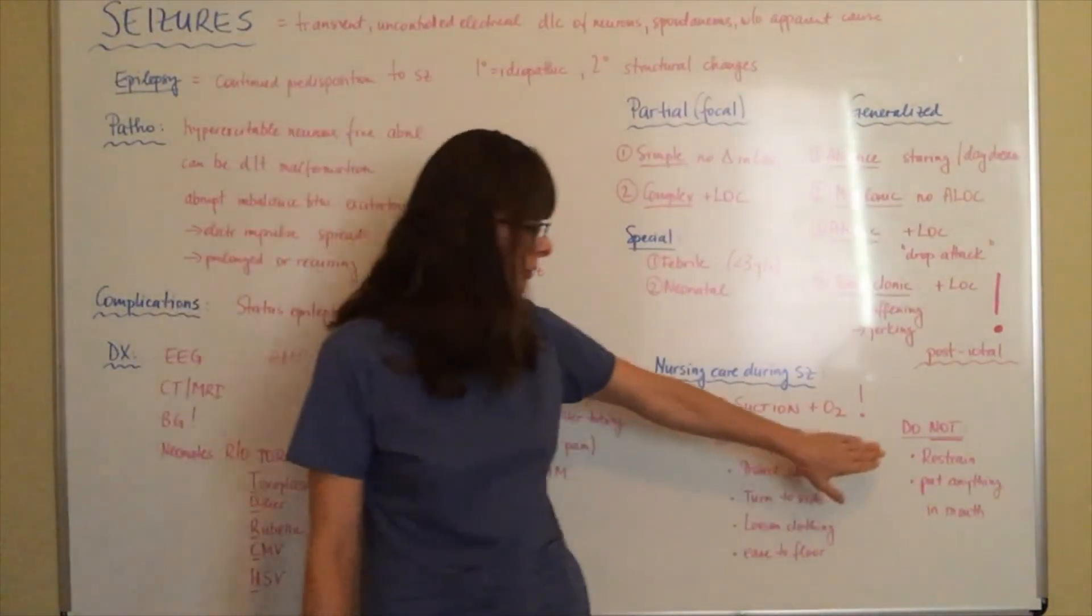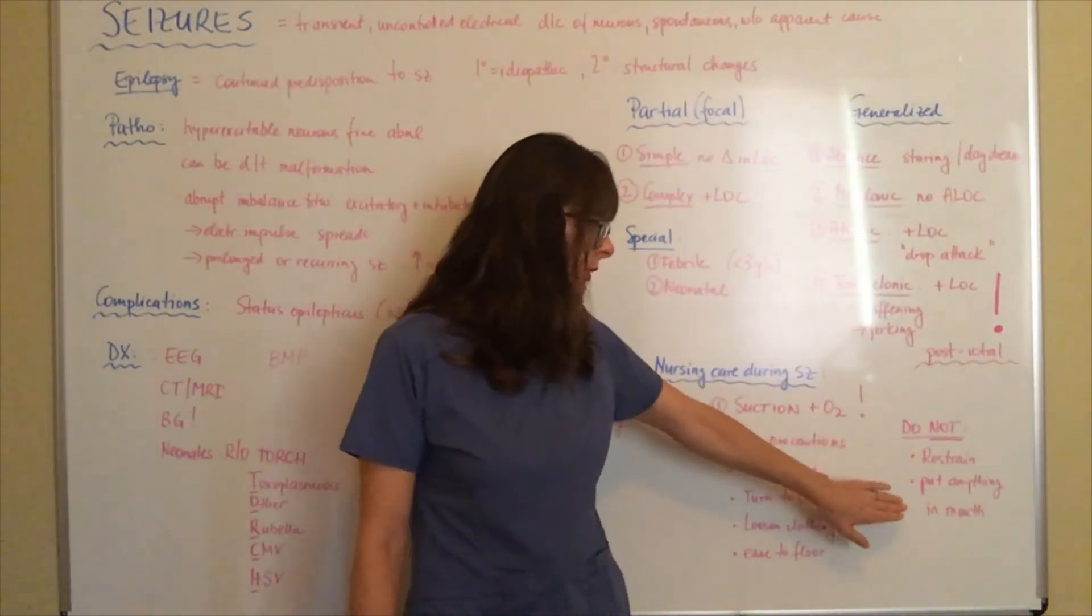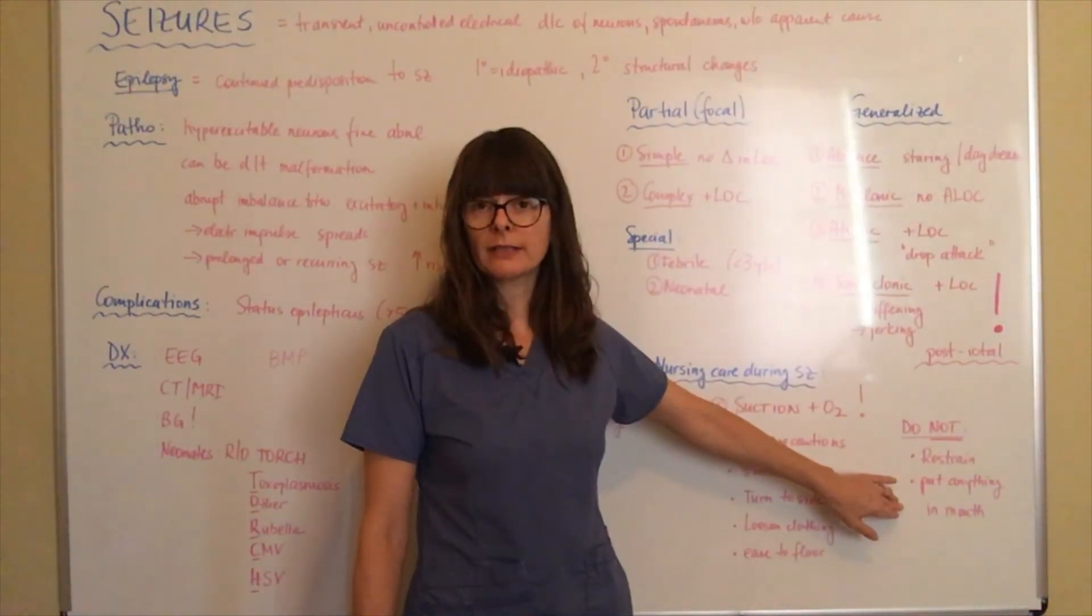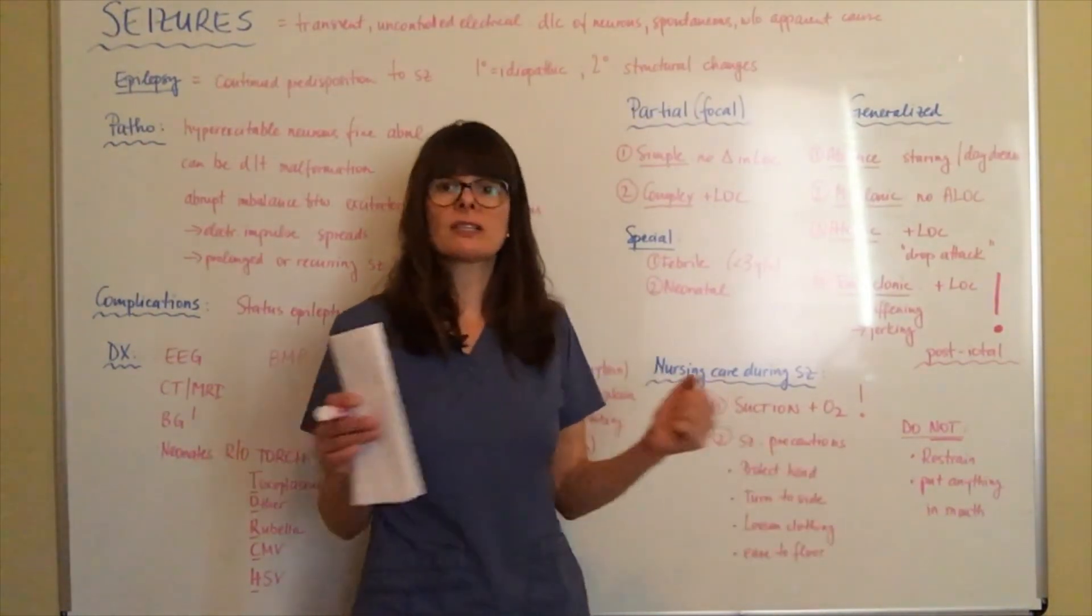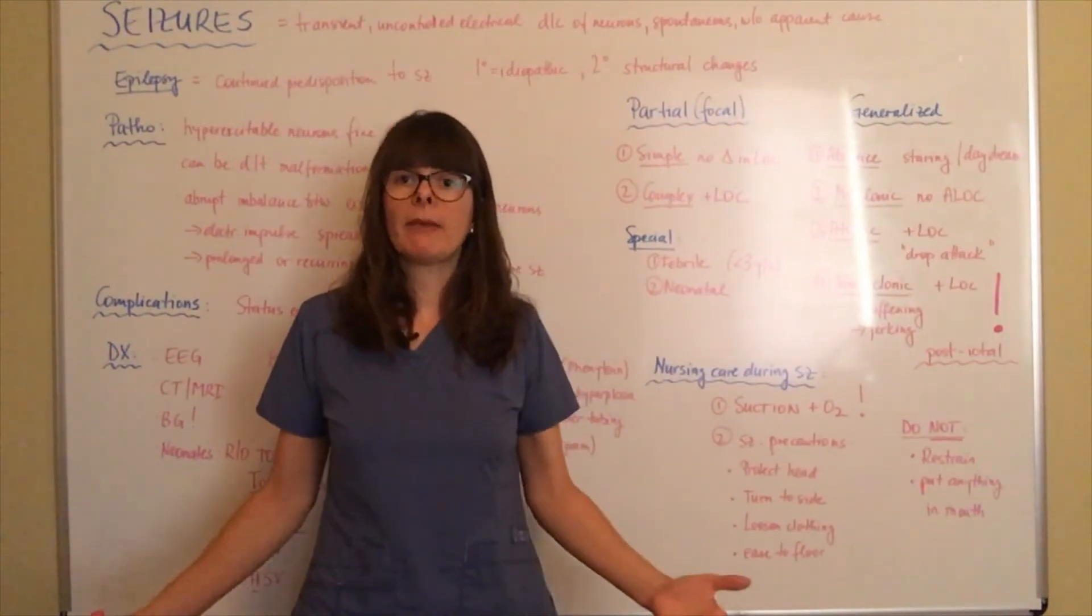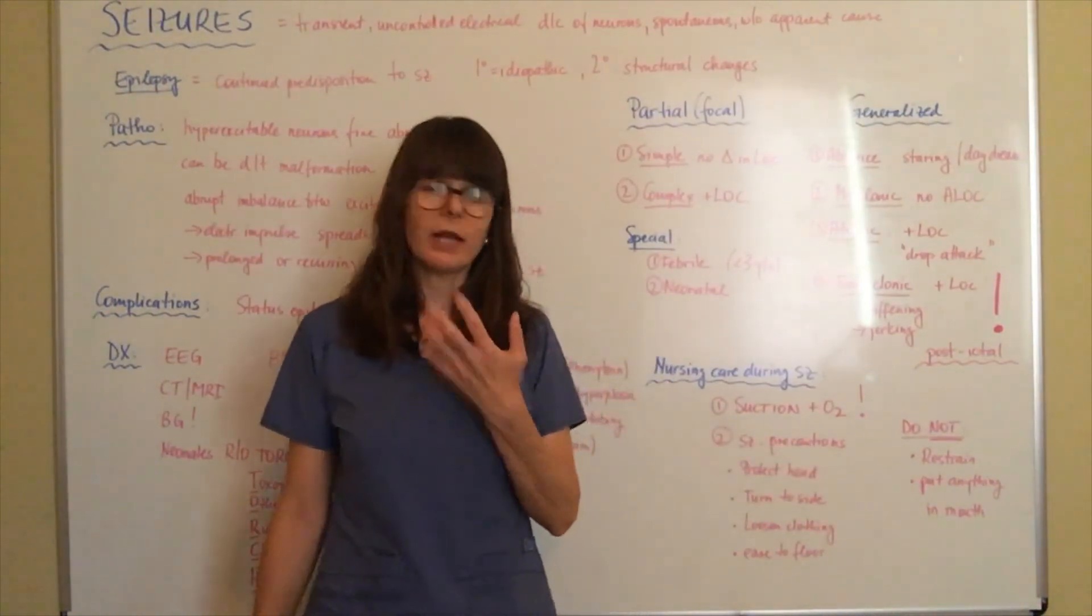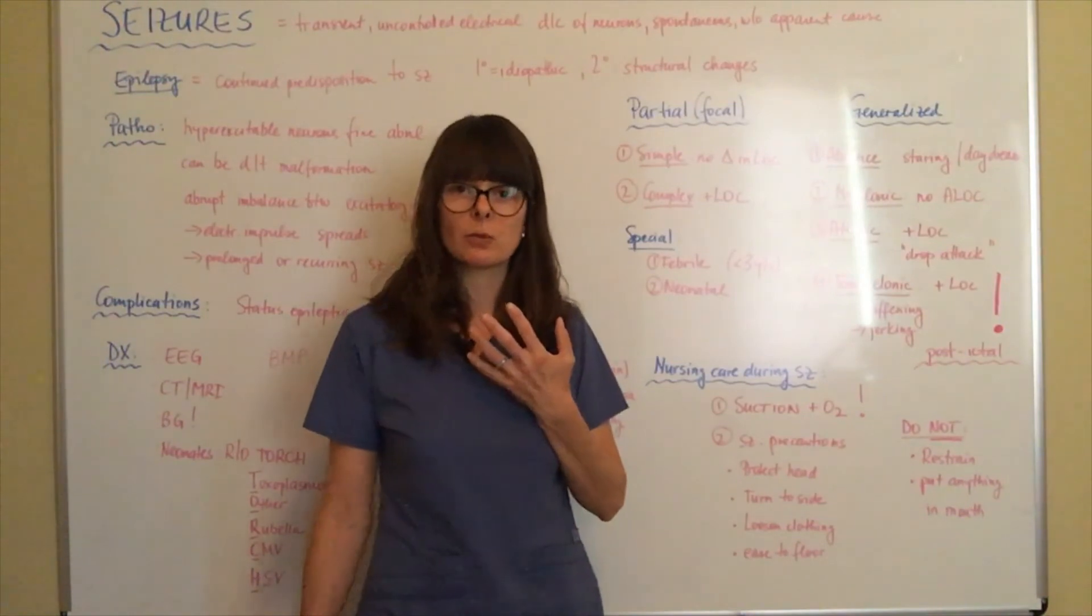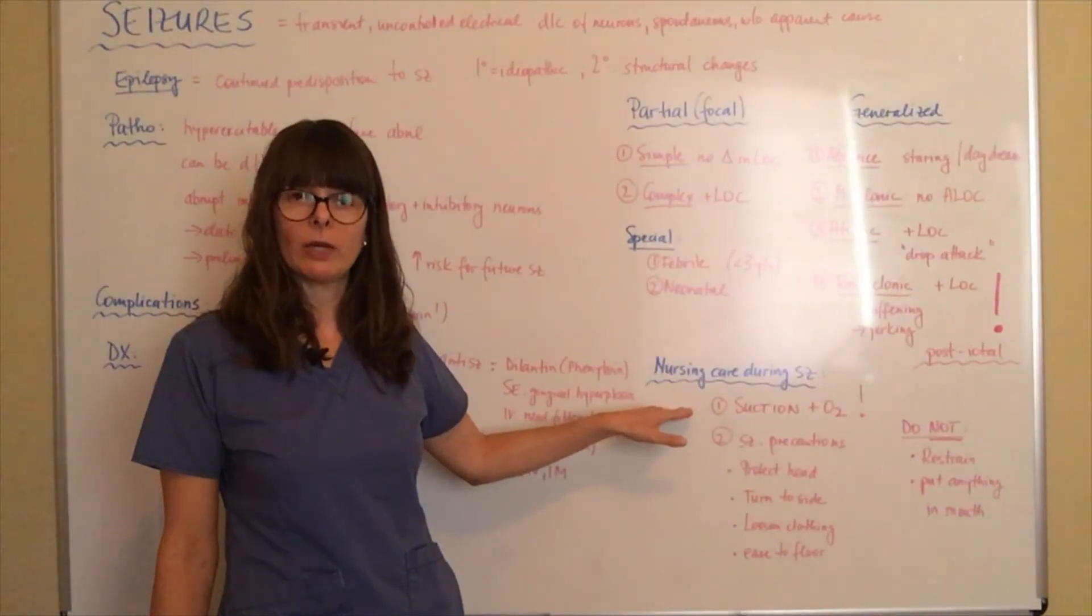Things that we do not want to do: do not restrain the patient or put anything in their mouth. These are kind of old wives tales and practices that have been established many years ago that are still kind of out there, but this is something that we don't want to do. If we logically think about that, if the patient is having uncontrolled jerking movements, we don't want to hold them down because they might dislocate a shoulder, they might break an arm or a leg. And certainly if they're already having issues with their airway, we don't want to put anything in their mouth. We want to keep that airway open as much as we can and have that suction equipment readily available so that we can help them clear their airway in case there is a problem.